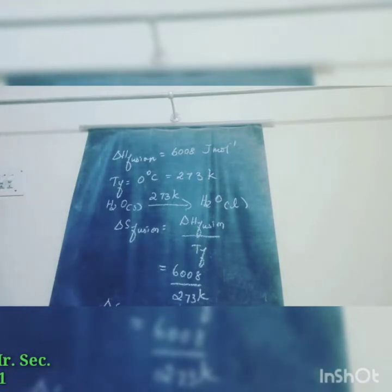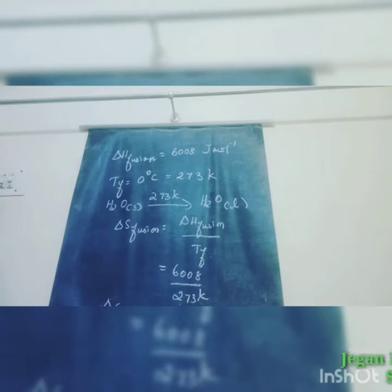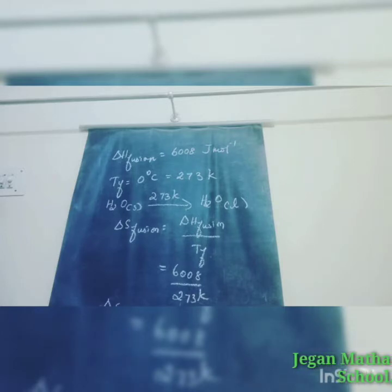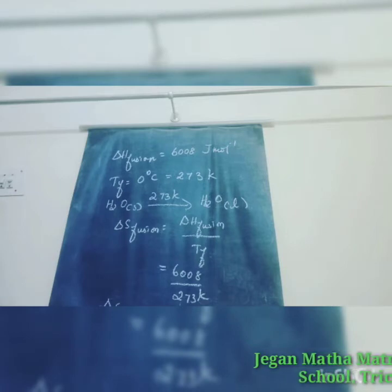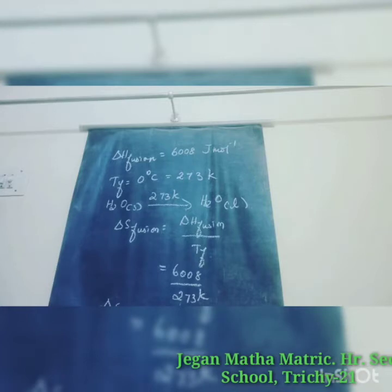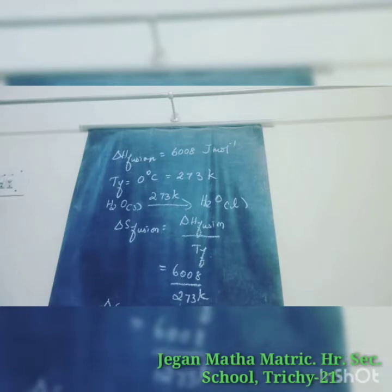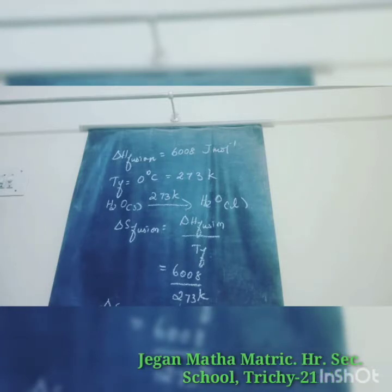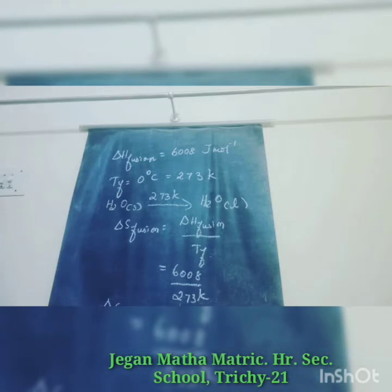Next evaluate problem: calculate the entropy change when 1 mole of ethanol is evaporated at 351 Kelvin. The molar heat of vaporization of ethanol is 39.84 kJ per mole. What is given? Tb is 351 Kelvin and ΔH_vaporization is 39.84 kJ per mole.